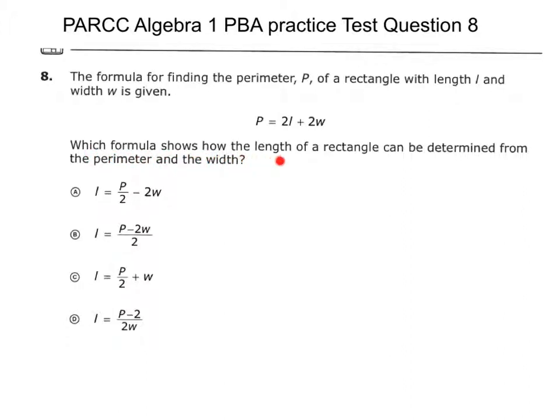Which formula shows how the length of a rectangle can be determined from the perimeter and the width? You can see in the answer choices, what they're saying is they want you to solve for L. They're wanting you to solve for what? So I need to take P equals 2L plus 2W and we want to solve for what?